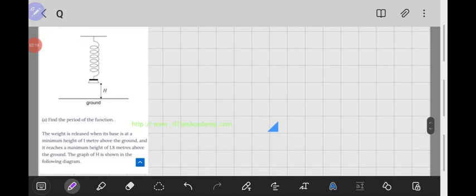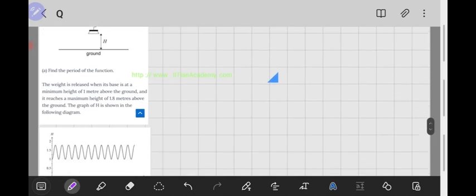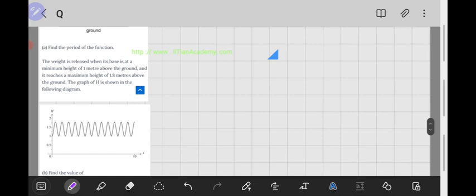Moving on to our next question, we are given some additional information where the weight is released when its base is at a minimum height of one meter above the ground and it reaches a maximum height of 1.8.